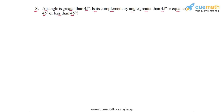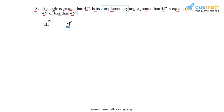Let's first understand this through a few examples. Let's say the original angle, which is greater than 45 degrees, is represented as x degrees, and its complementary angle is represented as y degrees. Two angles are complementary when their sum is equal to 90 degrees, so the sum of x and y should be equal to 90 degrees.